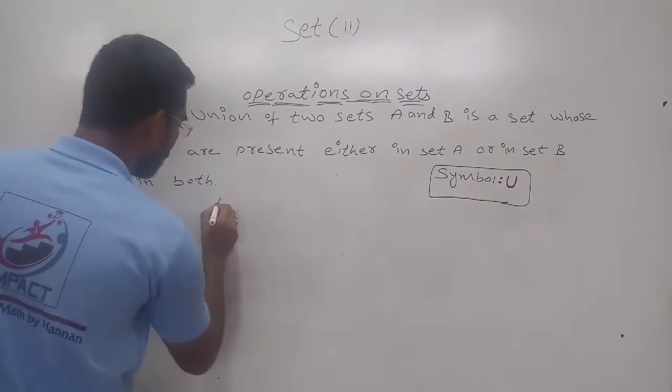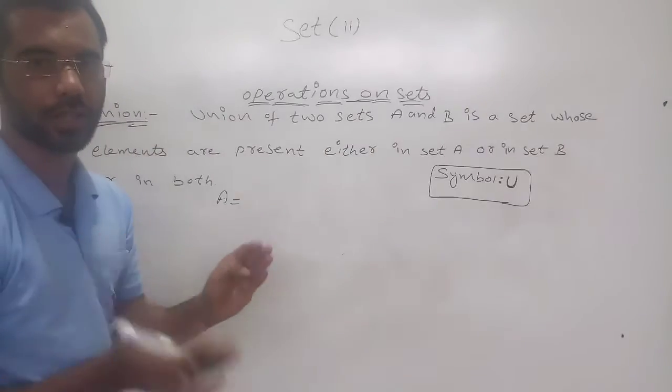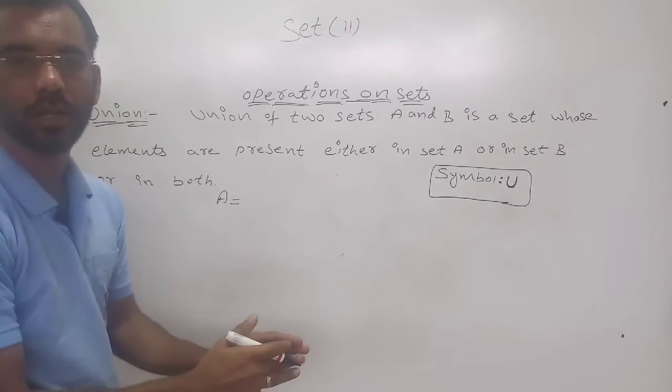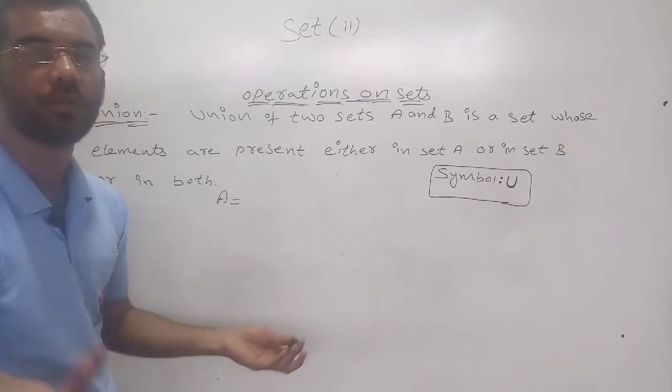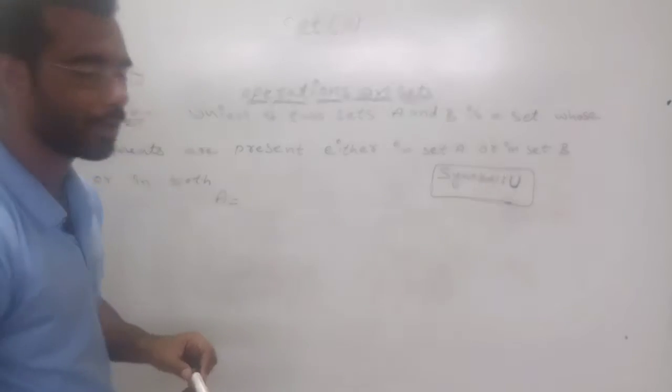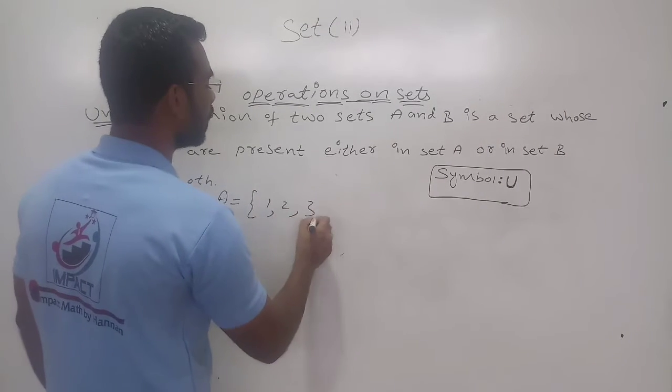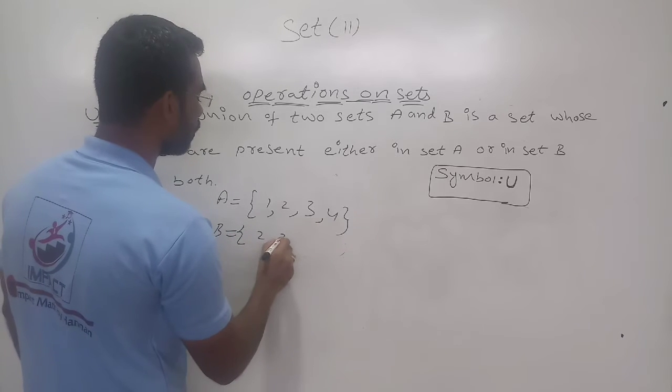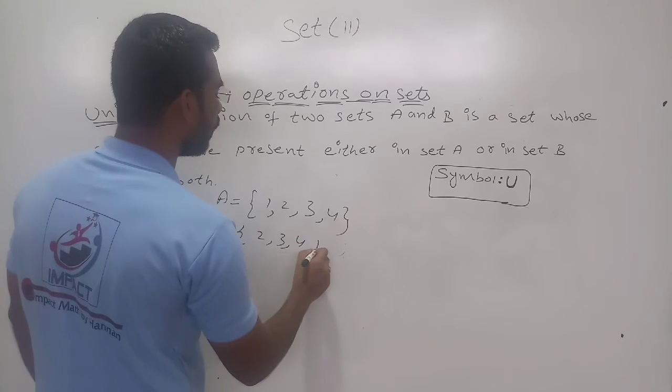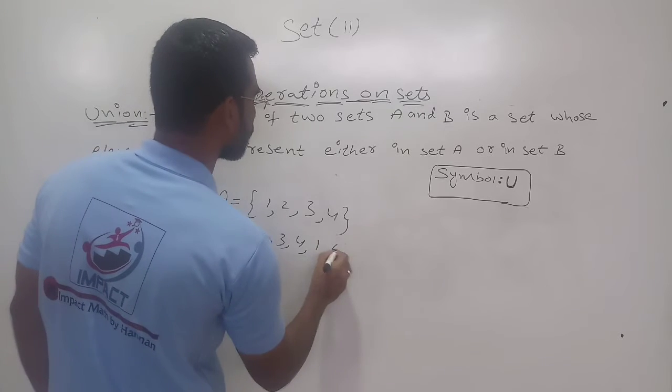Now, if I am taking A and B, first set, second set. It is not necessary what I have given you should take that only. What is given in the textbook you take. If you are doing for the example, then you can take your own, but it should be capital. A is equal to 1, 2, 3, 4. And B is equal to 2, 3, 4, 1, and take 6.